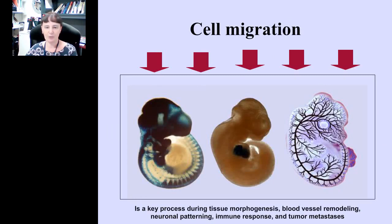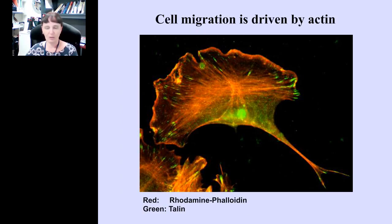Cell migration is a very important process throughout our lives. It starts early in embryogenesis, driving tissue morphogenesis during development. It also mediates major processes such as blood vessel remodeling, neuronal patterning, immune response, and tumor metastasis. All of these processes have actin at their roots. Many are mediated by migration of non-muscle cells, and in a typical non-muscle cell like a fibroblast, the actin cytoskeleton — highlighted here in red — forms major structures throughout the cell body.